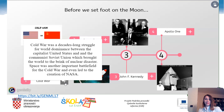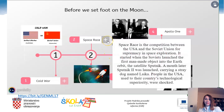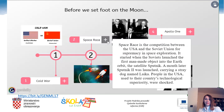Space was another important battlefield for the Cold War and even led to the creation of NASA. The Space Race is the competition between the USA and the Soviet Union for supremacy in space exploration. It started when the Soviets launched the first man-made object into Earth orbit — the satellite Sputnik. A month later, Sputnik 2 was launched carrying a stray dog named Laika. People in the USA, used to their country's technological superiority, were shocked.